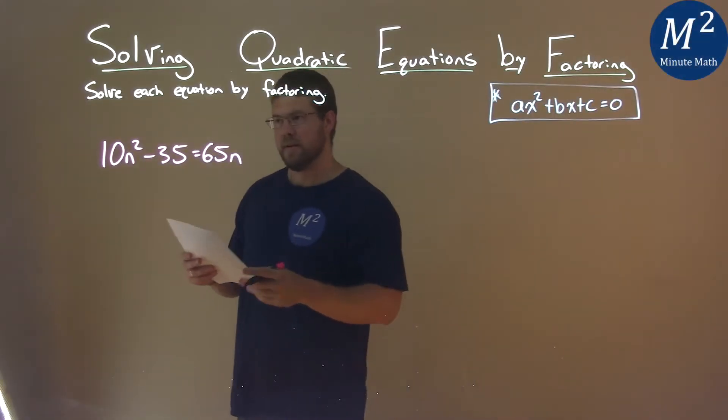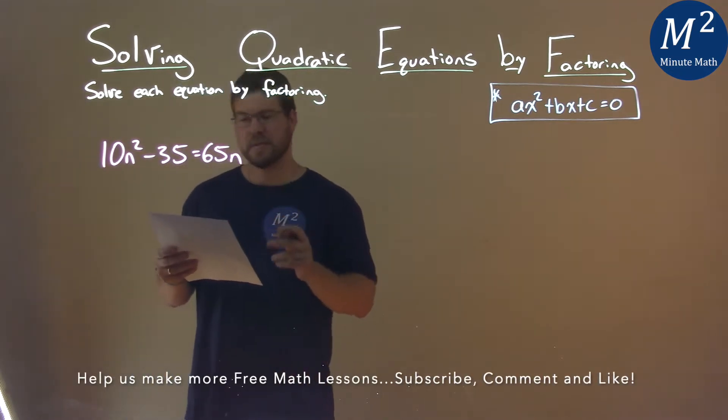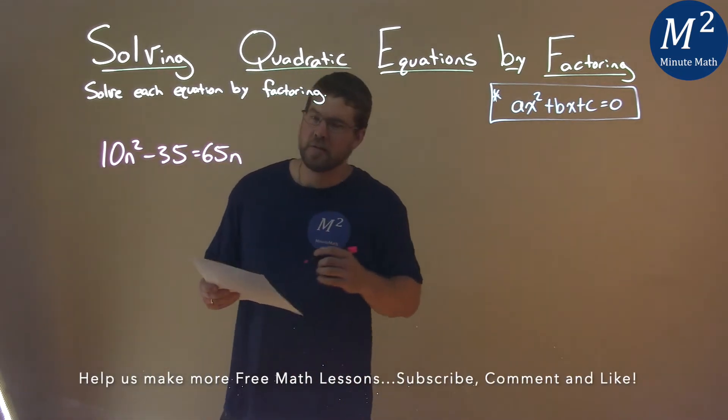We're given this problem right here: 10n squared minus 35 equals 65n, and we need to solve this by factoring.